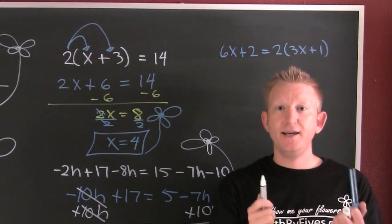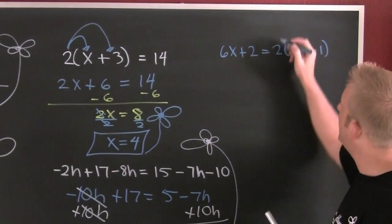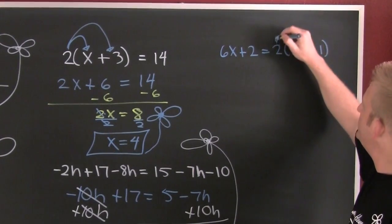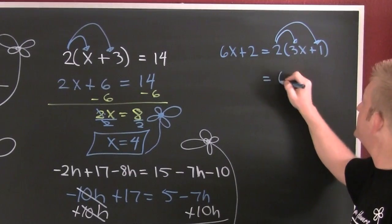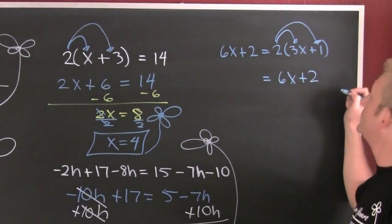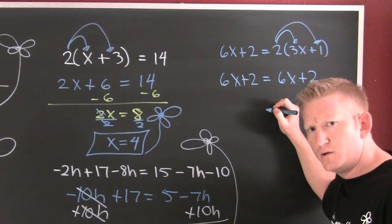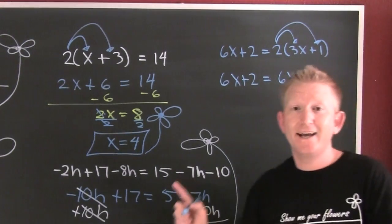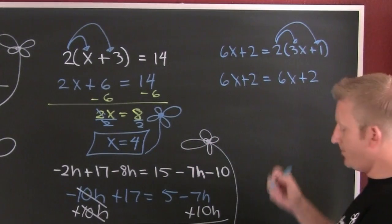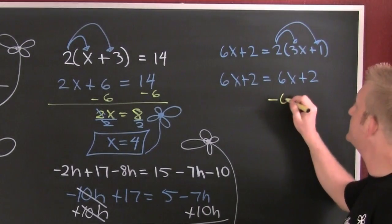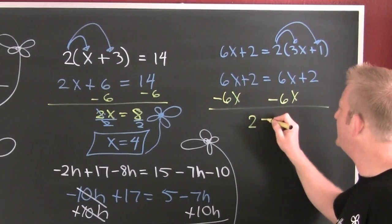Once again, I'm going to simplify each side. On the left there was nothing I could do. On the right, however, I could simplify — and that's going to be 6x plus 2. And then it's 6x plus 2. I've got x's on both sides, want them on one side — don't care which. So I'm going to subtract 6x off each side, and I'm left with 2 is equal to 2.